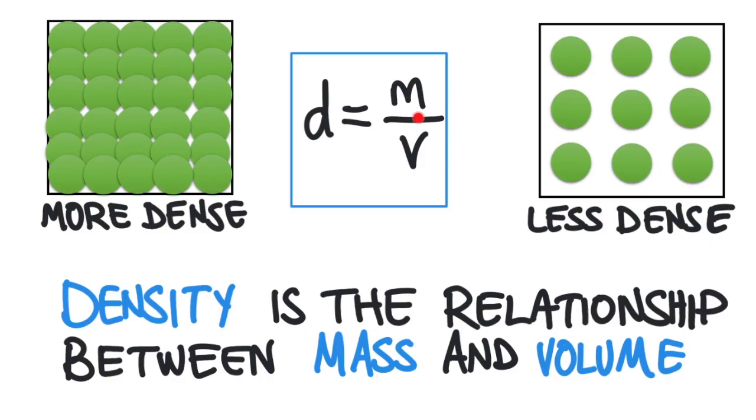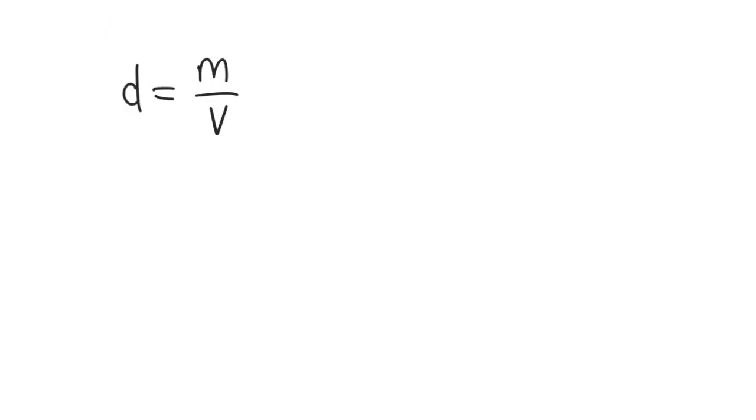In this case, we're going to solve for mass. We can rearrange the equation in a couple different ways. The first method uses a bit of algebra knowledge. I can multiply both sides of the equation by v to cancel the v on the right and move it to the left side. So the equation would become m equals d times v.